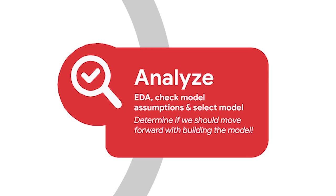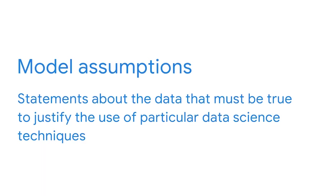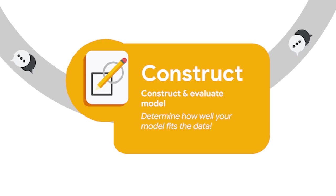After you plan, you have to analyze. In this stage, you examine your data more closely so you can choose a model or a couple of models you think might be appropriate. When working with regression analysis, this is where you use Python to perform EDA and check the model assumptions as needed. Model assumptions are statements about the data that must be true to justify the use of particular data techniques. As a data professional, you will use statistics to check whether model assumptions are met.